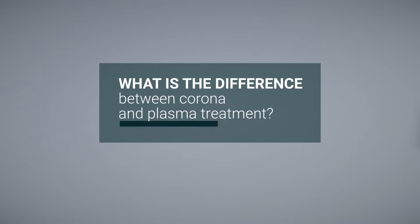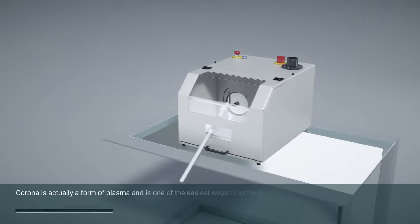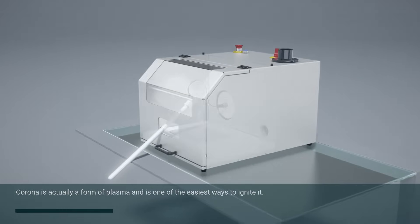One of the more common questions about electrical surface treatment that we get at Tantec is what is the difference between corona and plasma treatment? Corona is actually a form of plasma and is one of the easiest ways to ignite it.